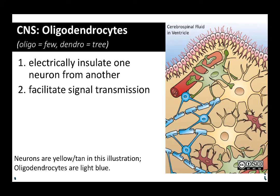Next we have oligodendrocytes — again, try to say it, because if you can say it you can remember it. Oligodendrocytes literally means few tree or branch cells, so cells with few branches. These are the cells in the central nervous system that electrically insulate parts of axons, which facilitates transmission of information down the axon, because that signal is carried by the exchange of ions between the inside of the axon and the extracellular fluid. Without that insulating covering, you end up with signal crosstalk — essentially leakage of electricity from one axon to another. That's actually what happens in the autoimmune disease multiple sclerosis.